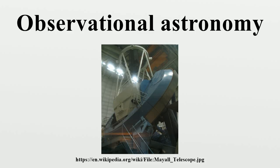Likewise, the presence of the full moon can brighten up the sky with scattered light, hindering observation of faint objects. For observation purposes, the optimal location for an optical telescope is undoubtedly in outer space, where the telescope can make observations without being affected by the atmosphere.